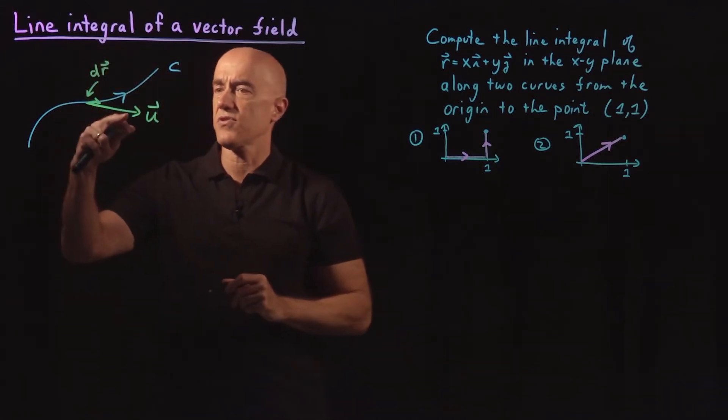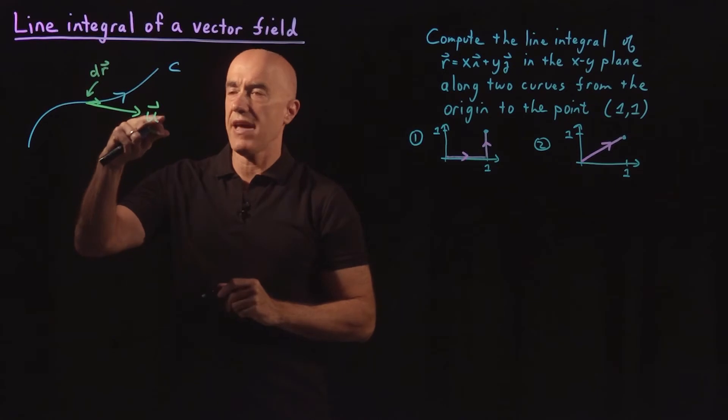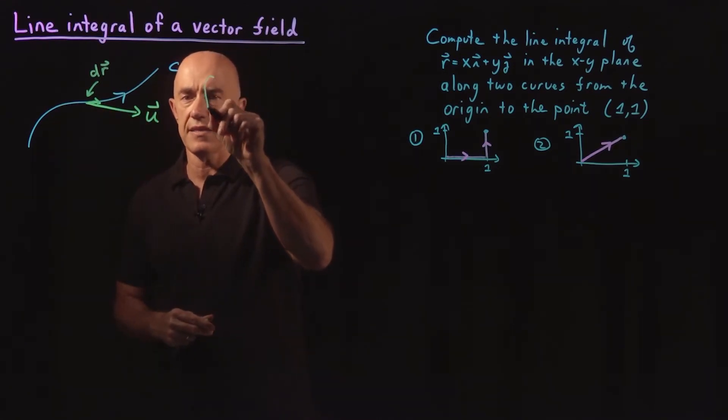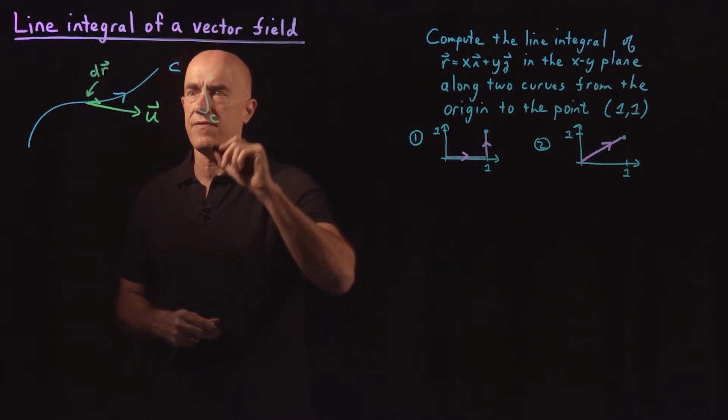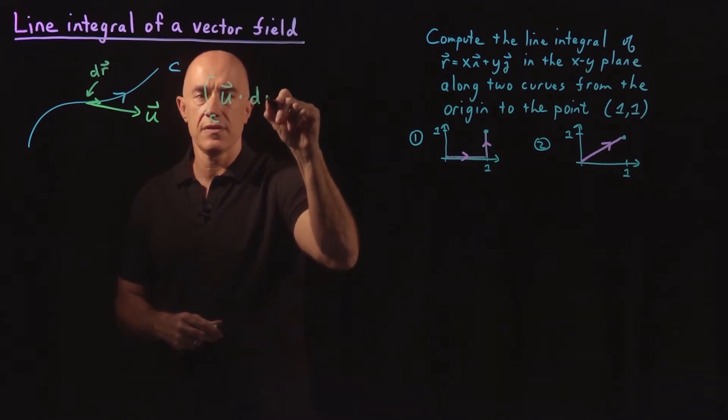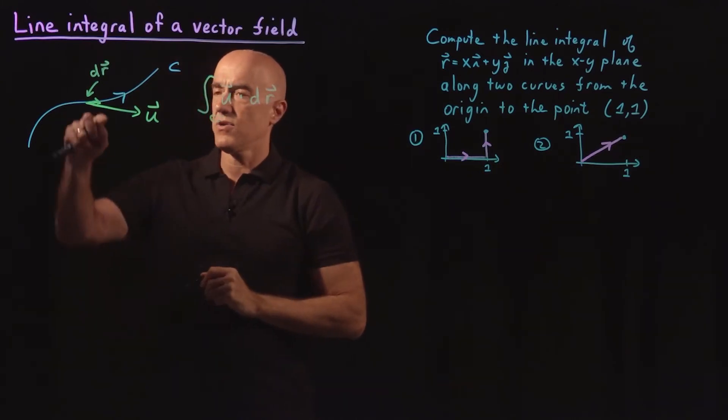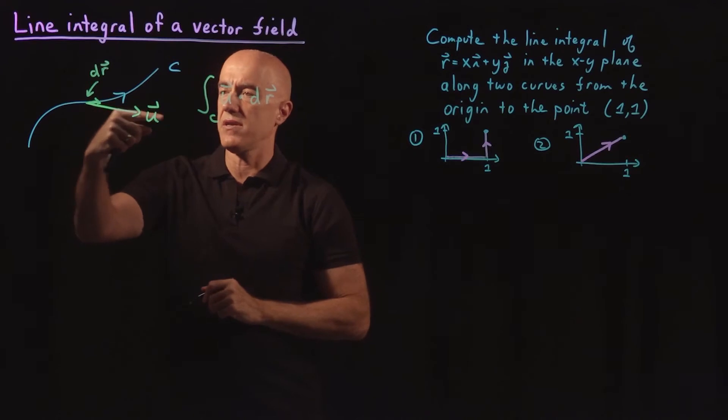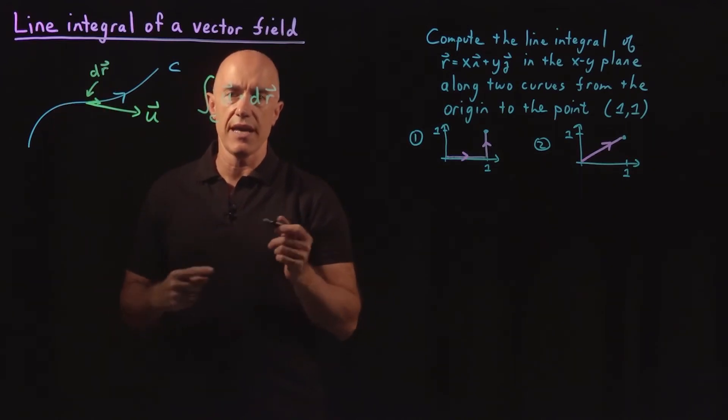So the line integral of this vector field U along the curve, we're going to write as the integral along the curve of U dotted into DR. So it's basically saying that you have to take the component of U along the curve to do the line integral.